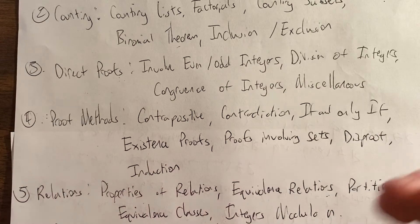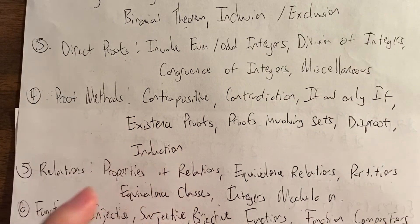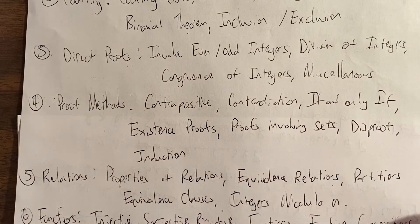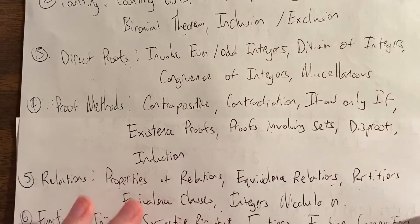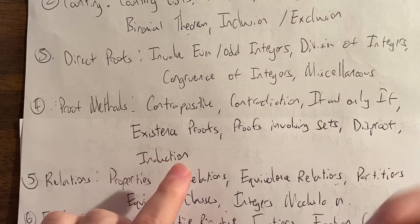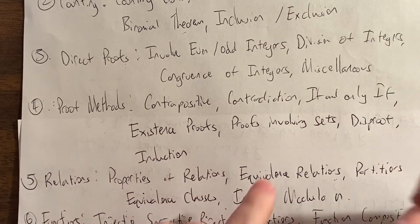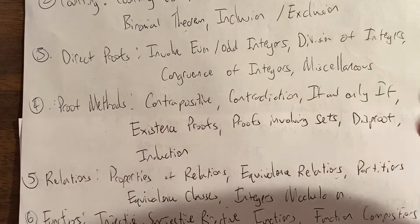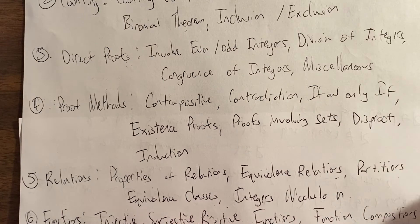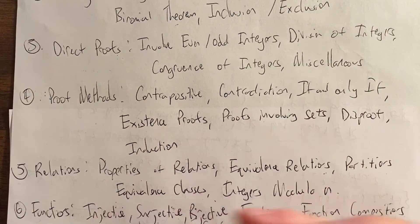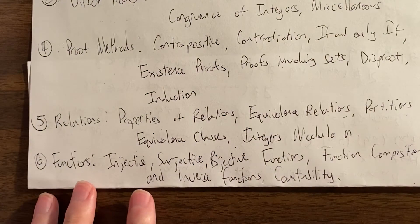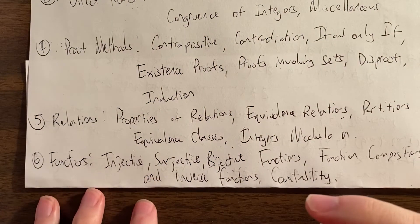Then we sort of talk about various proof methods: proof by contrapositive, proof by contradiction, if-and-only-if statements — where both sides are one of these three types. Then we prove existence proofs, also uniqueness proofs. Then we have proofs involving sets, so we prove that one set is a subset of another set, and we prove that two sets are equal. And then we conclude with, of course, proof by mathematical induction.